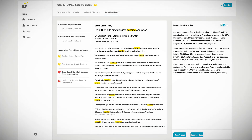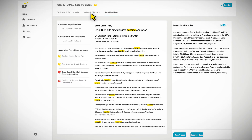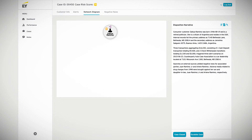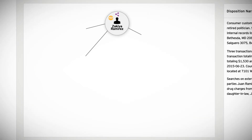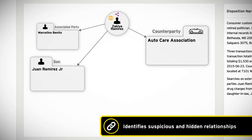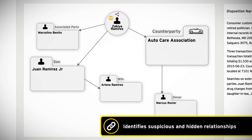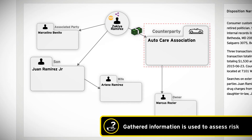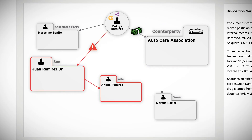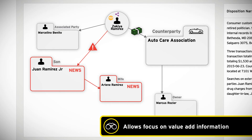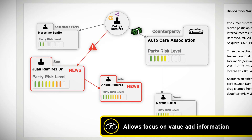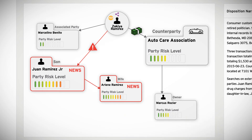EY's Cognitive Investigator also helps investigators to understand the complex network associated with the customers under investigation. In today's investigation tools, investigators review thousands of transactions and counterparties, manually determining if there is a potential link among all of them. With Cognitive Investigator, all previously gathered information is processed to identify prominent and frequent networks, risky relationships, and connections involving PEPs and negative news. Thus, investigators are quickly able to focus on the information that provides the most value towards determining a case's disposition.